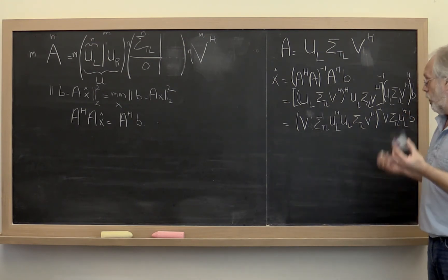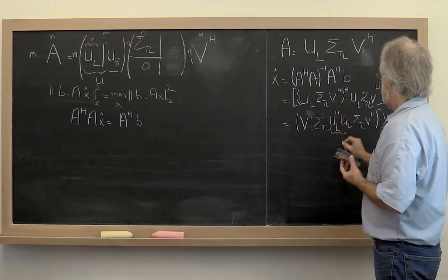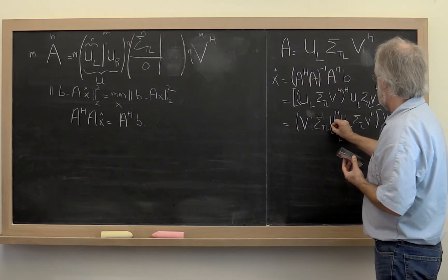Now this right here is the identity, so it disappears.